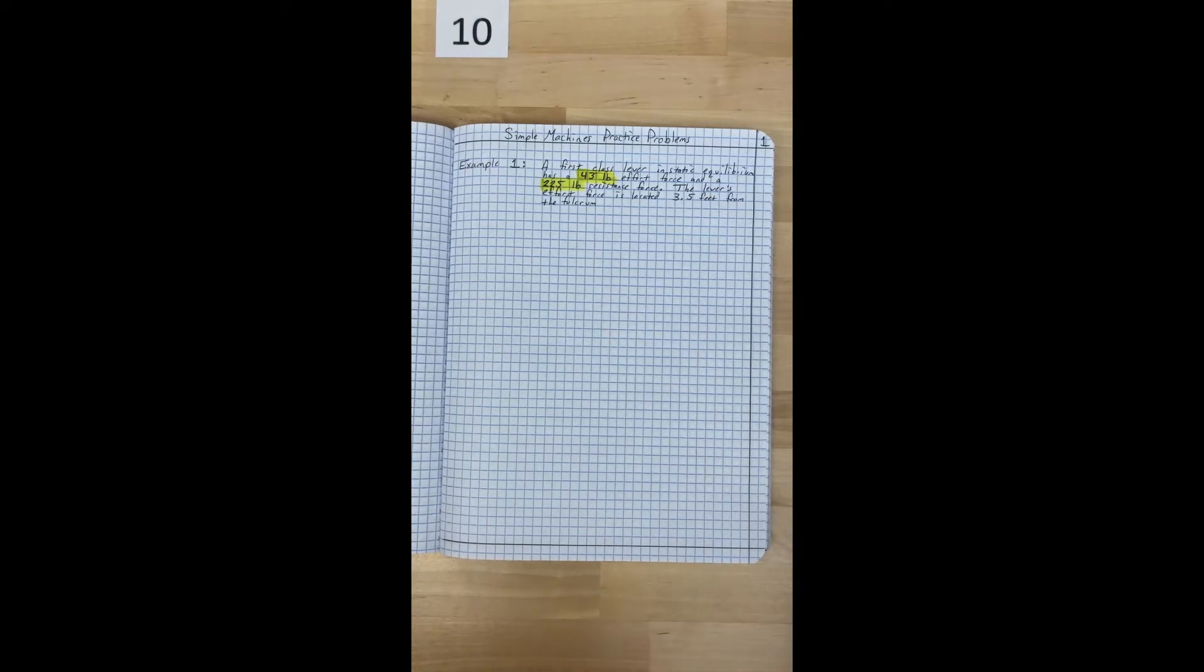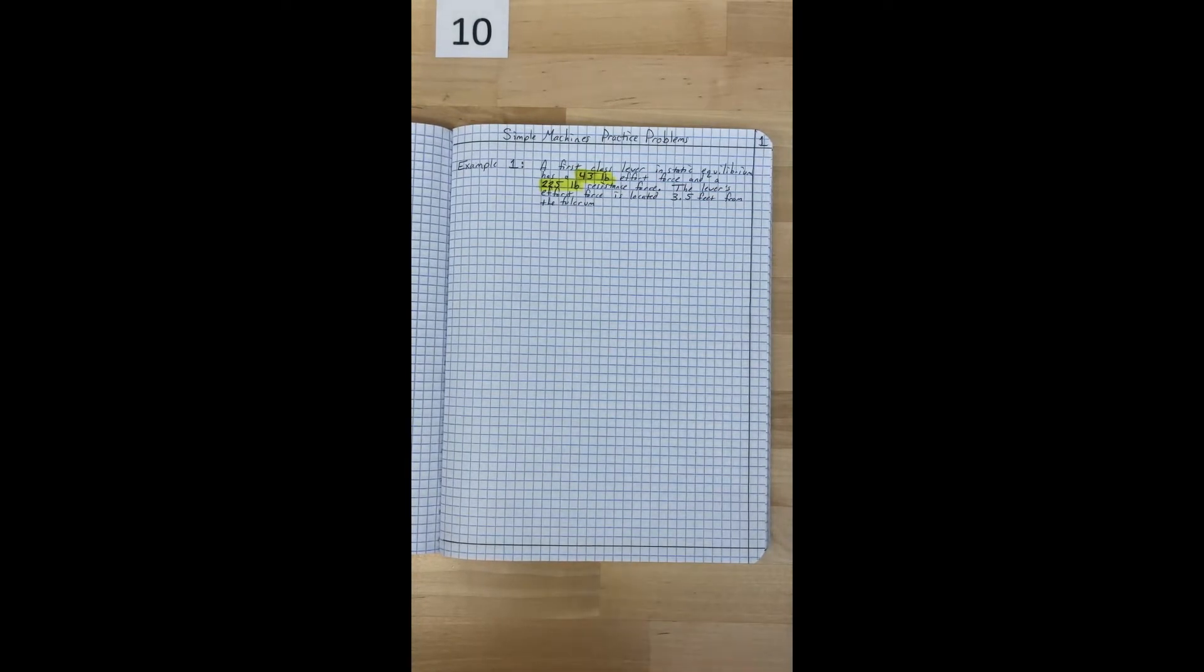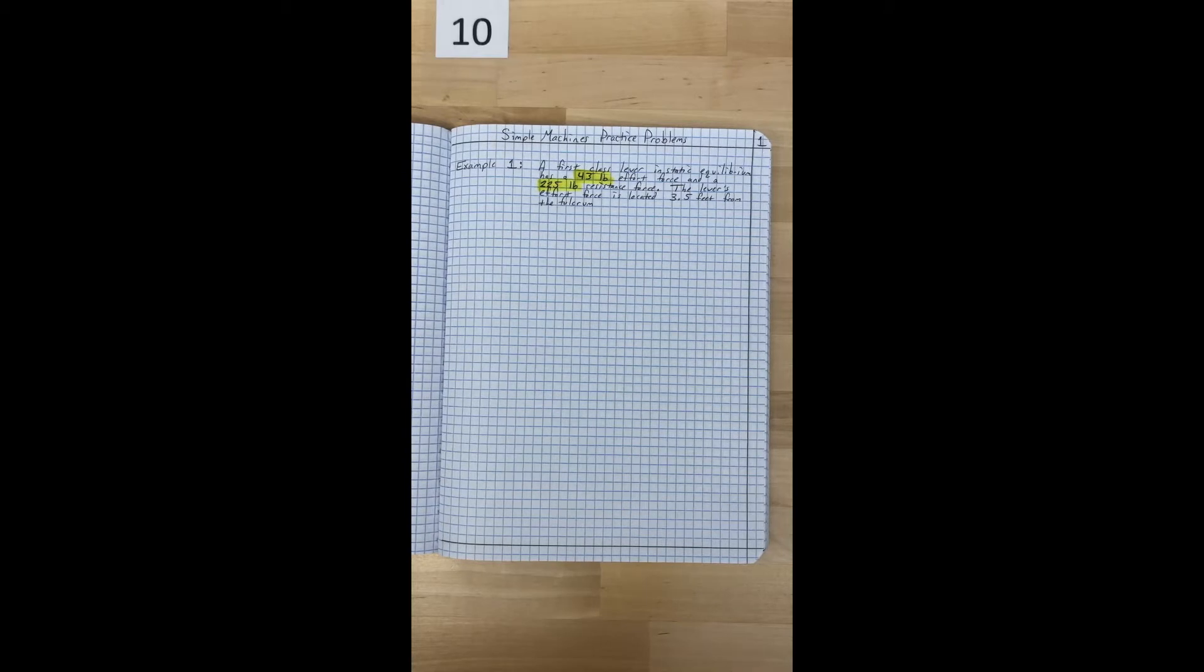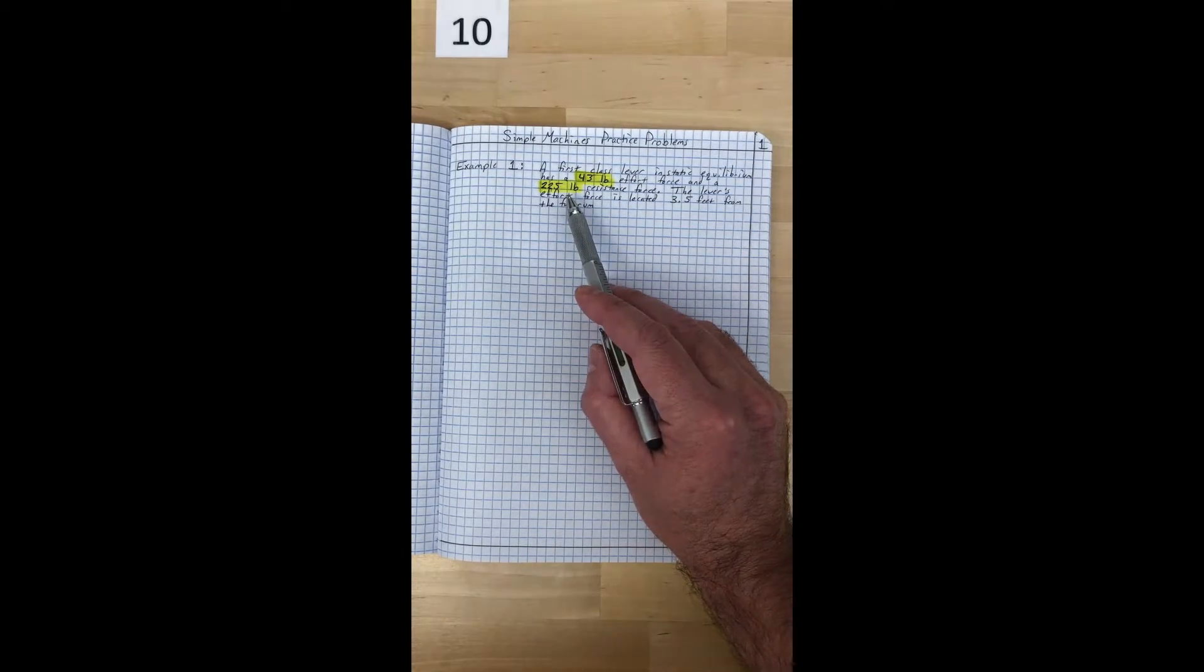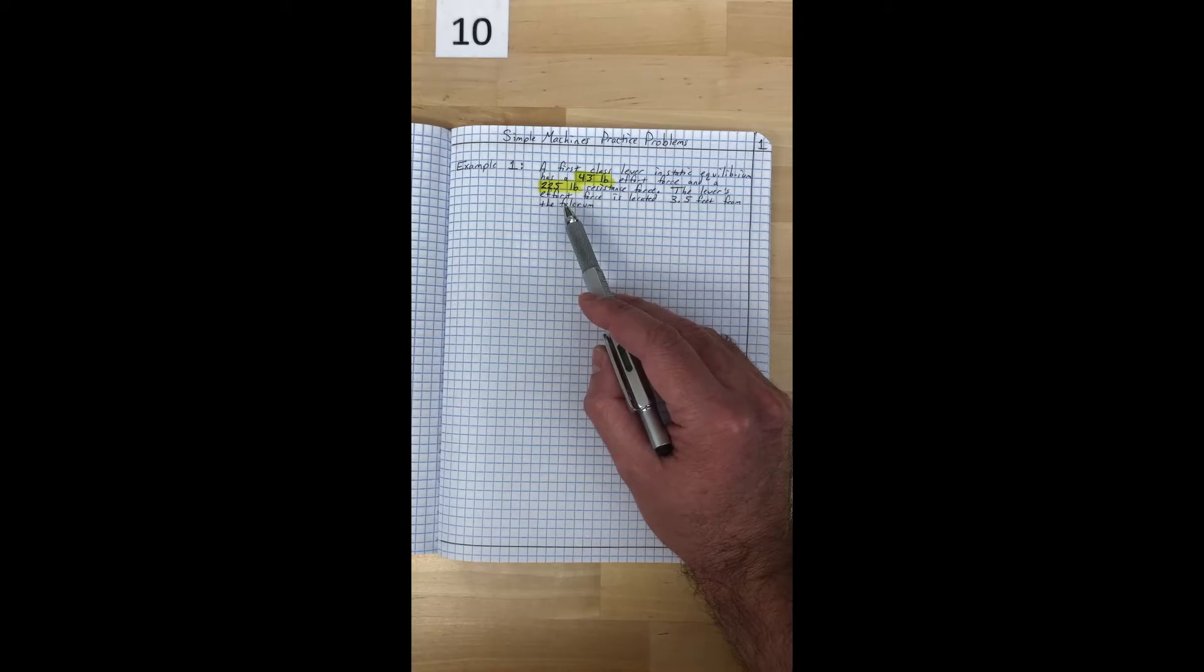Here we are in my example engineering notebook. This is just a quick demonstration on how to do one of the simple machine calculation problems. Here we have a first class lever in static equilibrium with a 43 pound effort force and a 225 pound resistance force. The lever's effort force is located three and a half feet from the fulcrum.